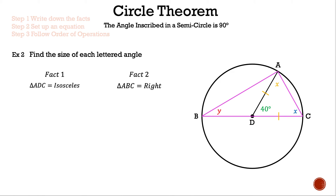Fact two: triangle ABC is a right triangle, because the longest side is the diameter, making it the hypotenuse, so angle BAC = 90 degrees. Write down your facts and it will be easier to find the missing angles.